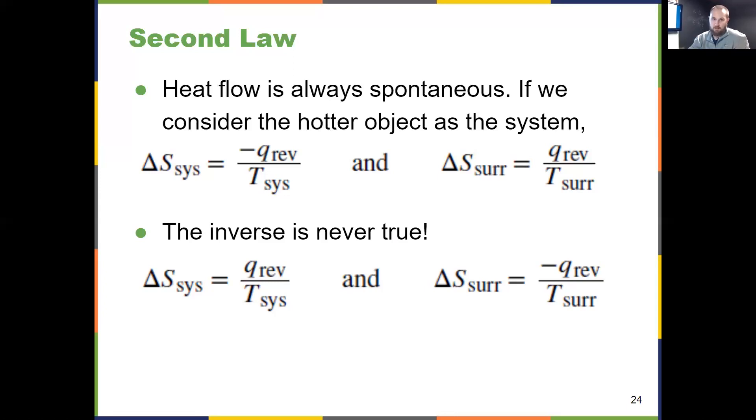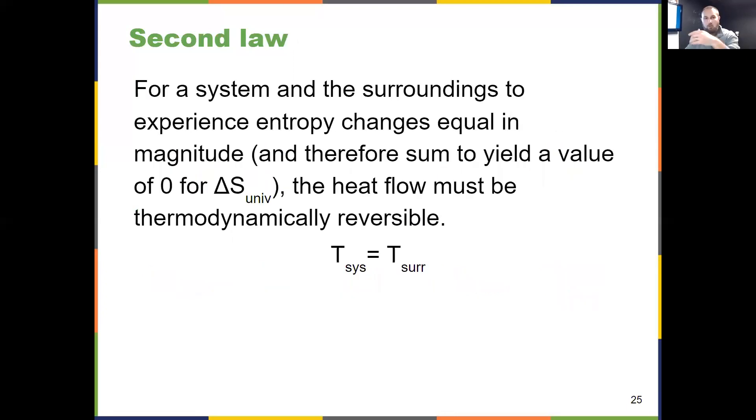Those were defined as q_rev, reversible. We're thinking about that theoretical reversible process. For something to be reversible, my system and surroundings have to experience entropy changes equal in magnitude - the same number but opposite in sign, adding to zero. This means the temperatures have to be equal for a reversible process.